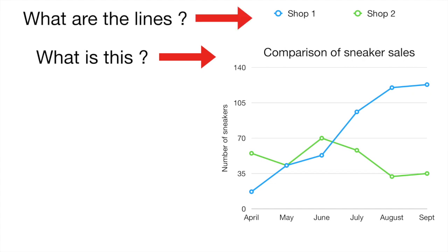And this is your legend. It tells you what each of these lines represent. So the blue line is going to be shop one and the green line is going to be shop two. So basically your graph is comparing the sales of sneakers in shop one and shop two. Then you want to look at your y-axis which is telling you the number of sneakers that were sold. And then your x-axis is telling you how many sneakers were sold from April to September.